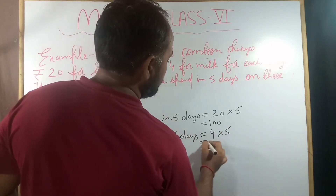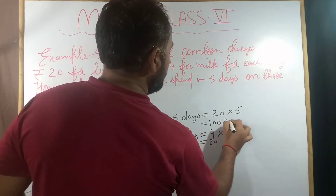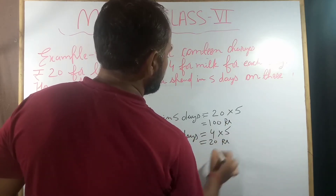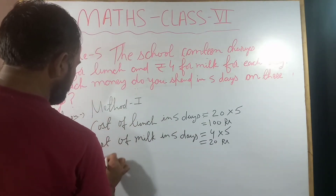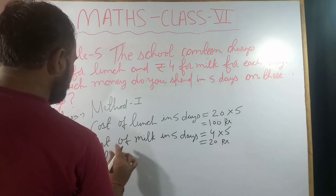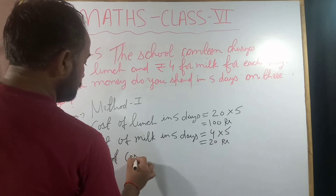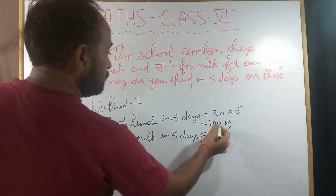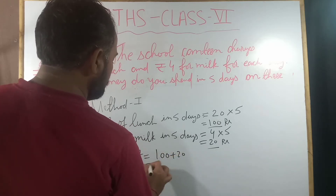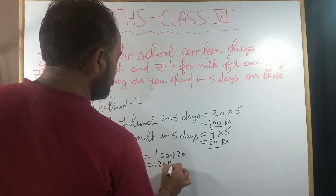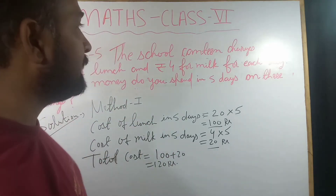4 rupees times five days gives us 20 rupees for milk. Now we have to find the total cost. Simply add: 100 plus 20.